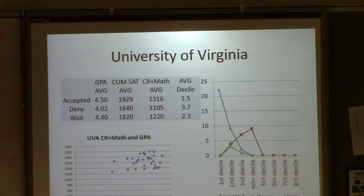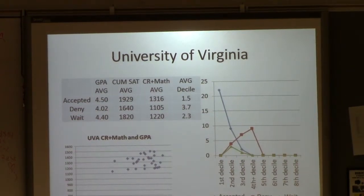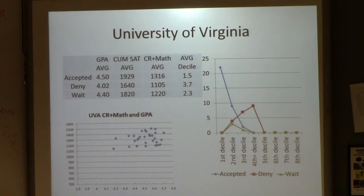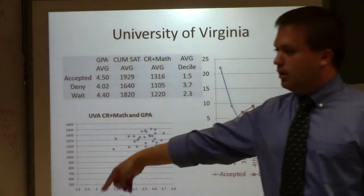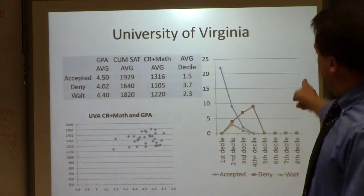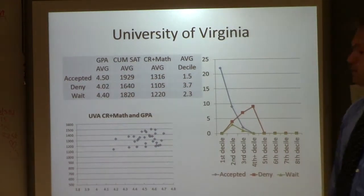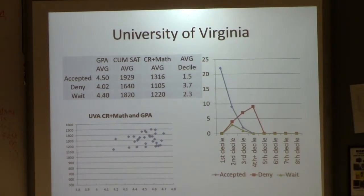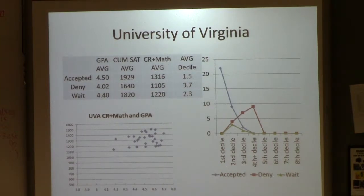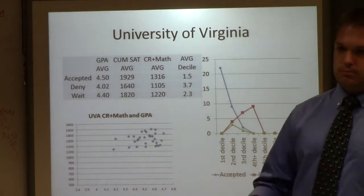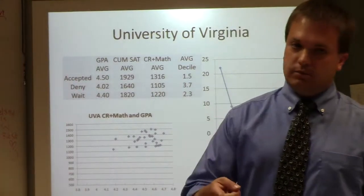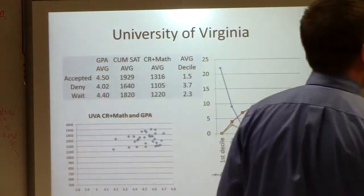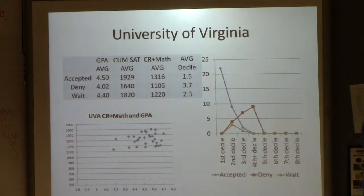That doesn't mean they're the most successful, the hardest working, or the smartest — but they're the students whose transcripts present to UVA as generally the most successful academically. We did have students in the second decile get in; it's tougher and the numbers go way down. We had two from the third decile get in as well. I want to direct your attention to the UVA critical reading, math, and GPA scattergram: the bottom of the GPA axis starts at 3.8, and the first person to apply was above a 4.1.